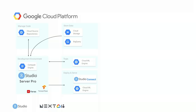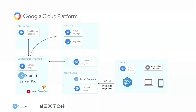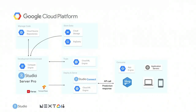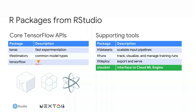RStudio also has a great product, RStudio Connect, to manage the entire ecosystem of models. For consumption, this could be on-premise, App Engine, R Shiny — a great visualization front-end tool from RStudio — or mobile devices. This opens up all models built in R for consumption across the company, consumer products, and internal processes.